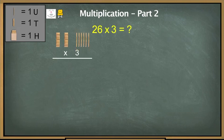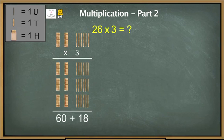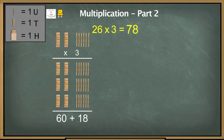When we multiply 6 units by 3 we get 18 units. Now we need to multiply 2 tenths by 3. 2 tenths times 3 is 6 tenths. So we get 6 tenths which is 60, and 18 units which is 18. So 60 plus 18 is 78.